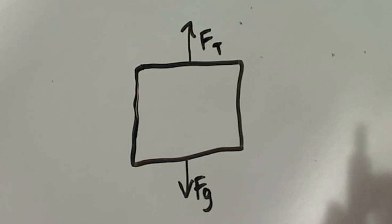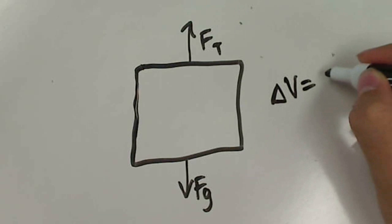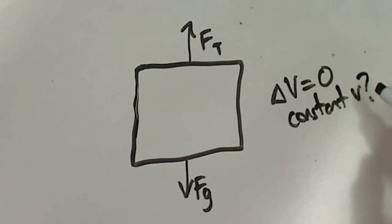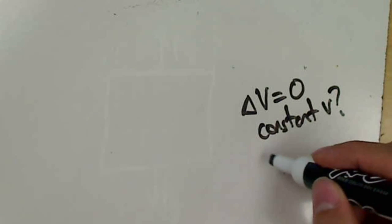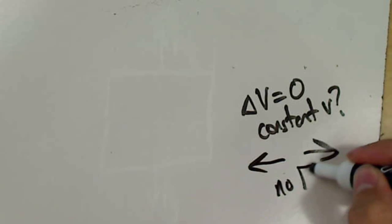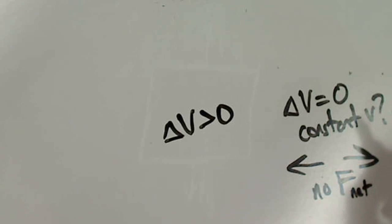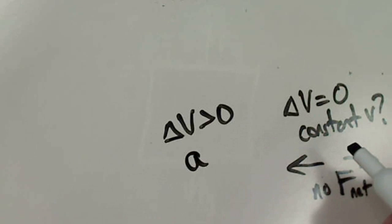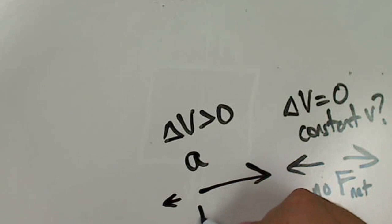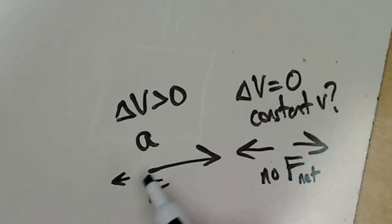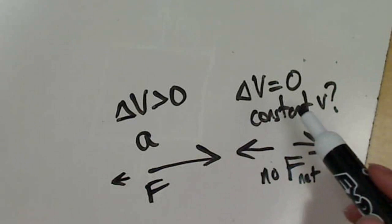So these free body diagrams — don't make them too hard. Just think: is the change in velocity zero? Constant velocity means same-size arrows, no net force. If the change in velocity is greater than or less than zero, that means we have acceleration, which means there'll be a larger arrow in one direction than the other because there is a net force present. Consider what direction the forces are in, label them with the appropriate labels, and make sure — are the arrows the same size for constant velocity, or is one bigger indicating acceleration?